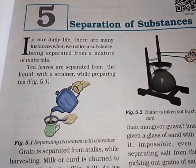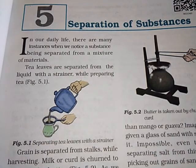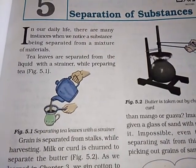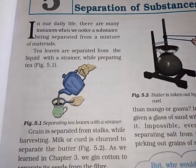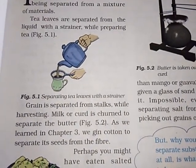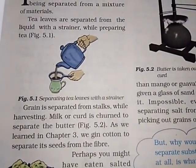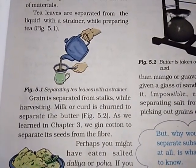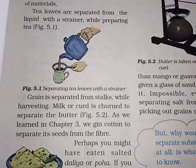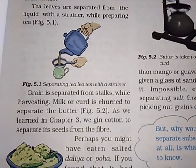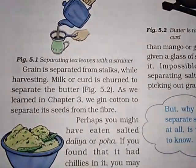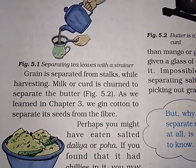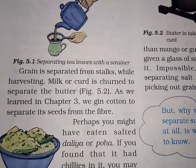Tea leaves are separated from the liquid with a strainer while preparing tea. Grain is separated from stalks while harvesting. Butter is separated when we churn milk or curd. As we learned in chapter 3, cotton seeds are separated from the fiber.